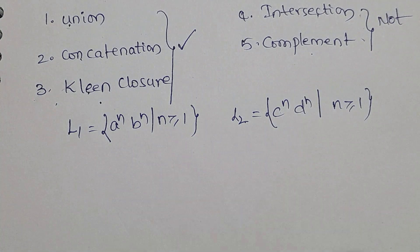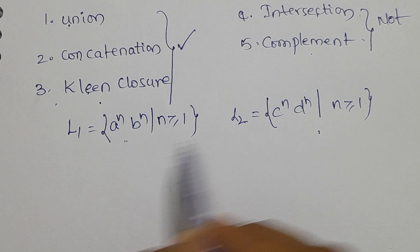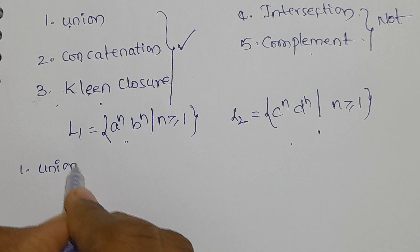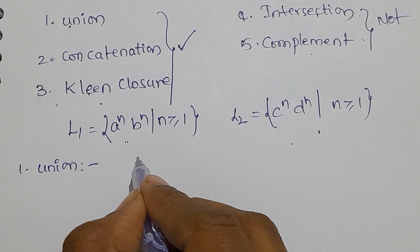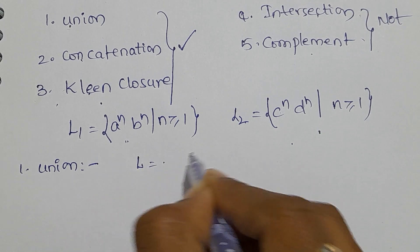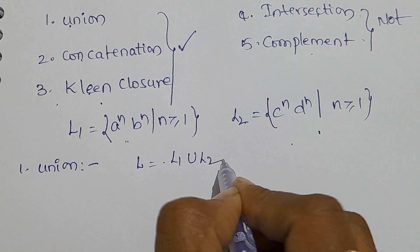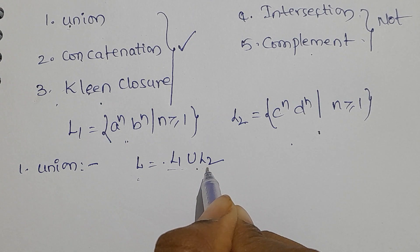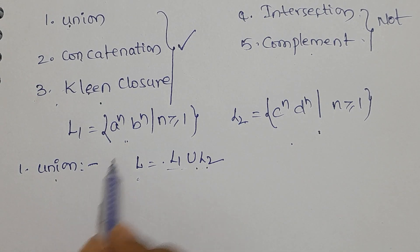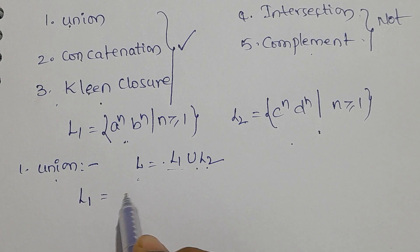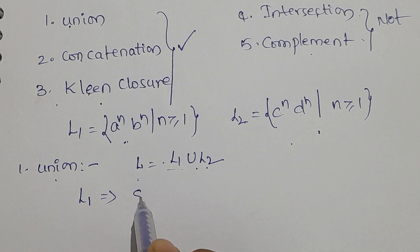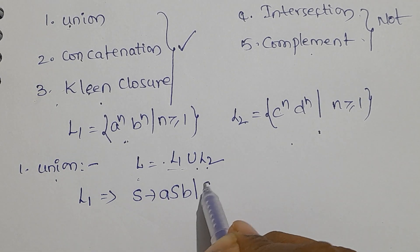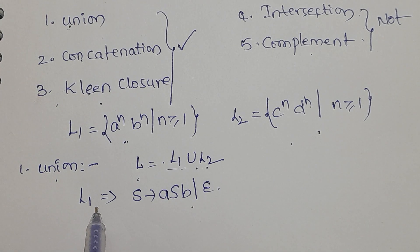If I apply the union of these two languages, I will get one more language — L1 union L2. Now, how can I say the union of these two is closed under union? According to L1, I am generating one context-free grammar: S → aSb | ε. So I can generate strings belonging to L1 using this production.